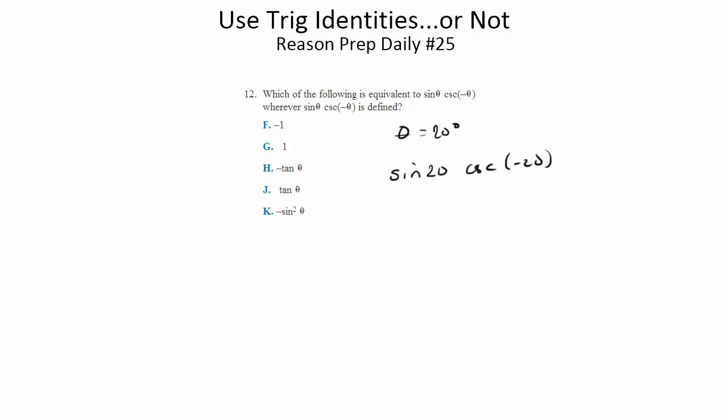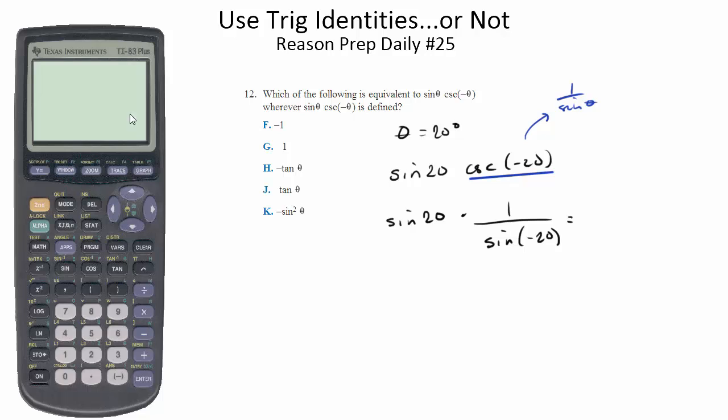Now, you do need to know this trig identity, that the cosecant is just 1 over the sine of theta. So we're going to transform this into the sine of 20 times 1 over the sine of negative 20. And now let's put that in our calculators and see what we get.